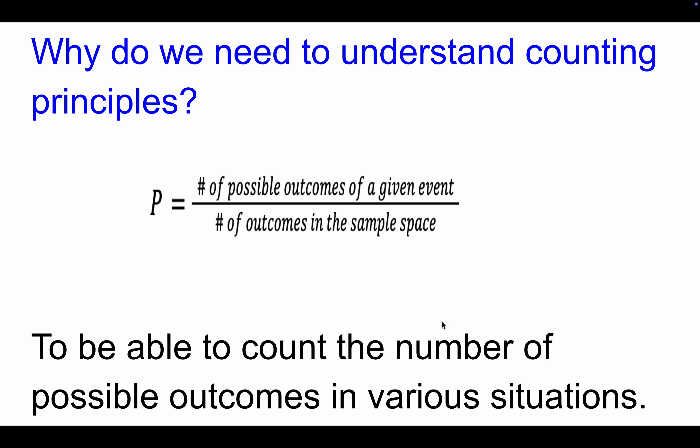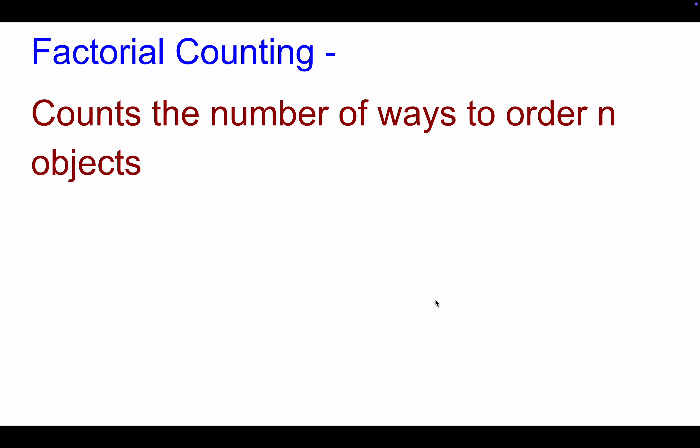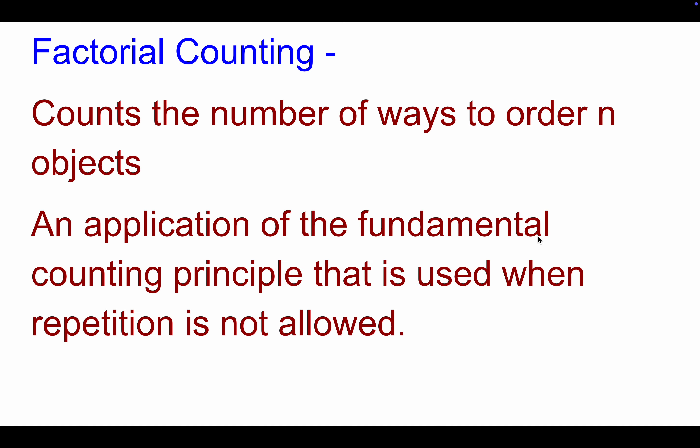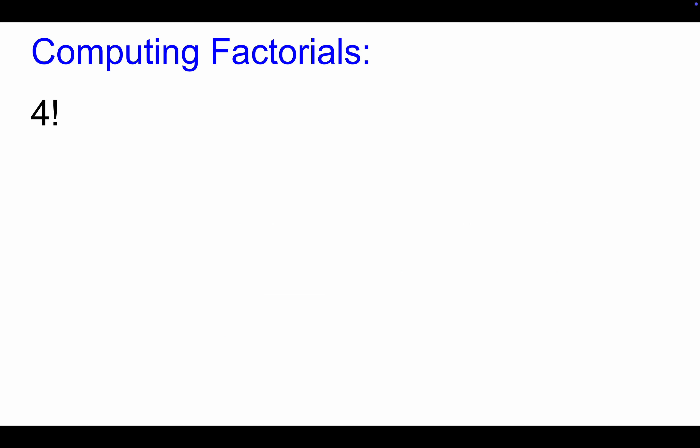Today we're going to talk about factorial counting. Factorial counting counts the number of ways to order n objects. So if you've got a certain number of objects, factorials can tell you the number of different ways they can be arranged. This is an application of the fundamental counting principle that's used when repetition isn't allowed. We'll see that with some examples coming up.